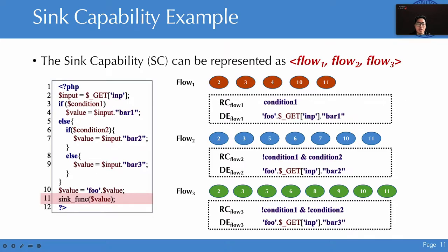This page shows a concrete example for sink ability representation. The sink function is located on line 11. Due to the conditional statement, inputs reach the sink with three flows. For each flow, our system performs forward tracking from the entry on line 2 and collects the reaching conditions and data expressions. The sink ability is represented as the set of reaching conditions and data expressions on the three sink flows.